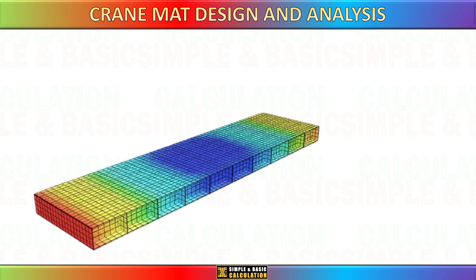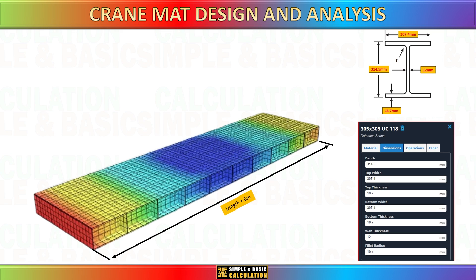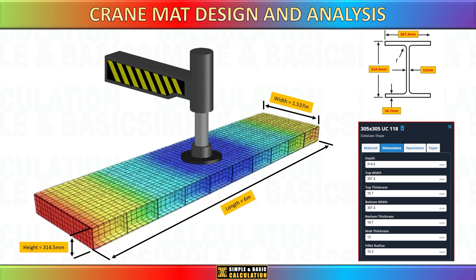In this video, I will demonstrate the process of designing and analyzing crane mats using the SkyCIV software. We will be designing crane mats using universal beams. These beams will be joined together to form a mat structure, which will provide support for the outriggers of a mobile crane or crawler track. We are using universal beam 305 by 305 UC118.